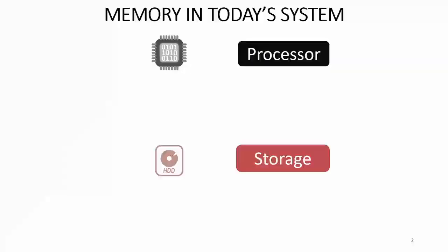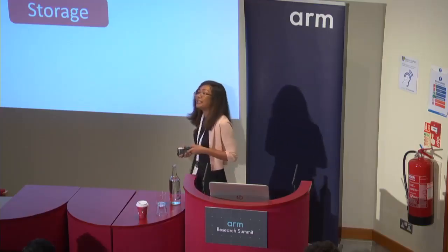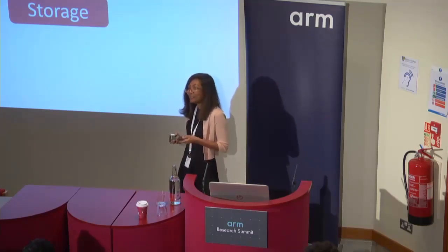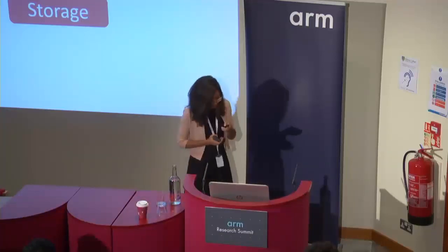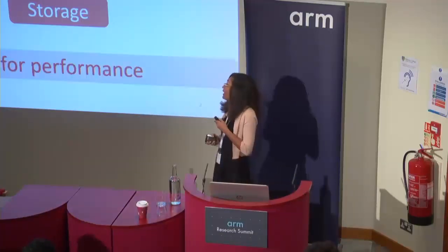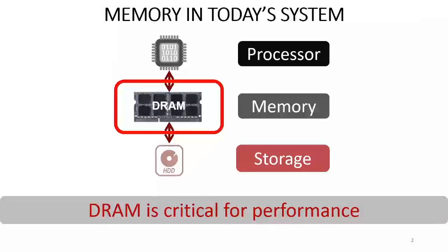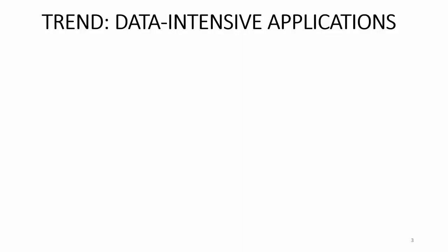In our current system we have storage for persistent data and we have the processor which is operating on that data. But our disk is very slow, so in between the processor and storage we have main memory built with DRAM so that the processor can access some data buffered in memory. DRAM is actually pretty critical for gaining performance, and it's becoming even more critical because of all these data-intensive applications.